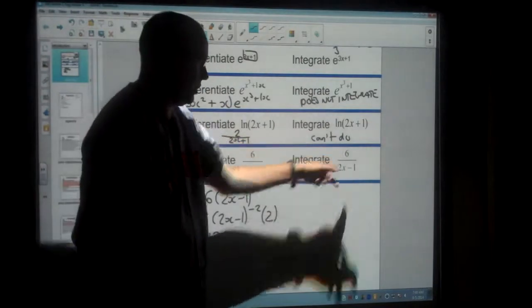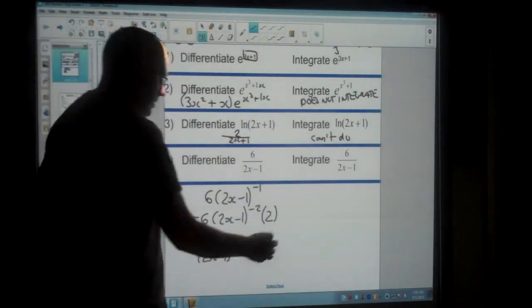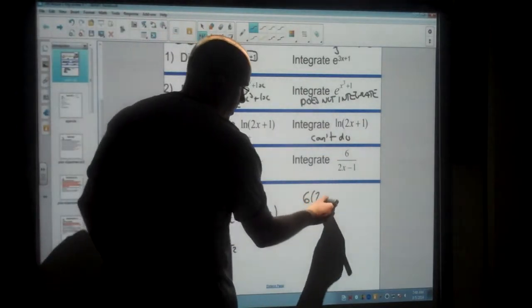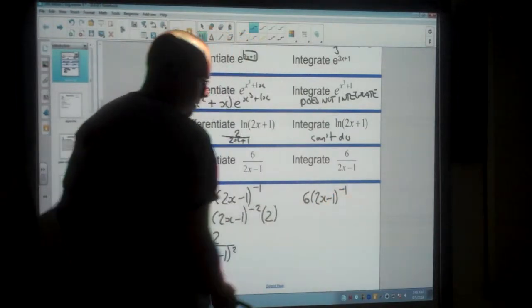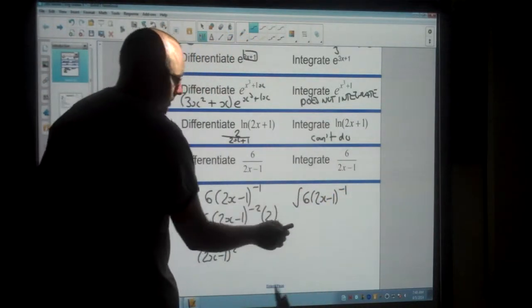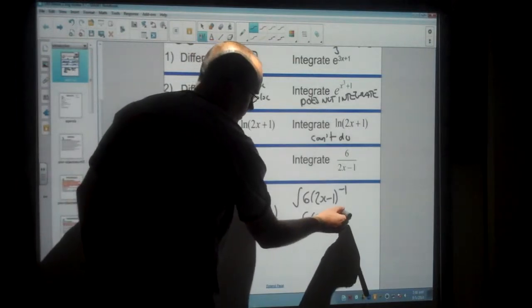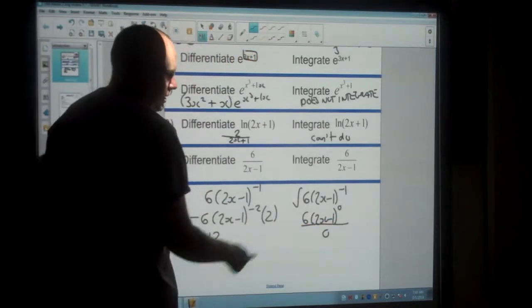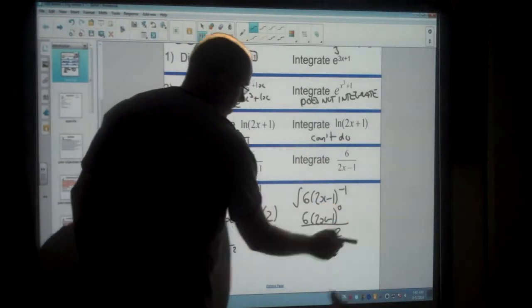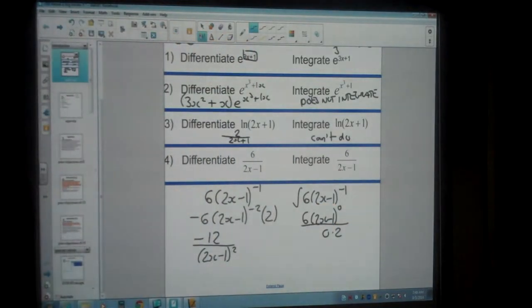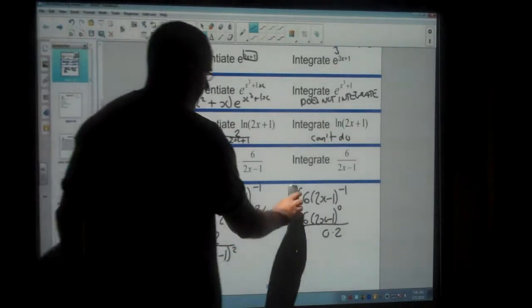Now we can try doing the inverse chain rule for this as well, because we've got 6 times 2x minus 1 to the negative 1. So if we were to integrate that, then we can increase the power by 1, divide by the new exponent, and also divide by the derivative of what's inside the parentheses. The only problem is 0 times 2 is still 0, so we're dividing by 0, which is not allowed. So this is actually not the inverse chain rule.